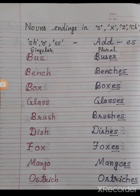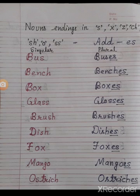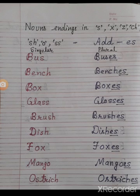जब noun का end में S, X, Z, CH, SH, O, या double SS आता है, तो हम plural बनाने के लिए simply ES लगा देते हैं। Same spelling लिखनी है और उसमें ES को add करना है।